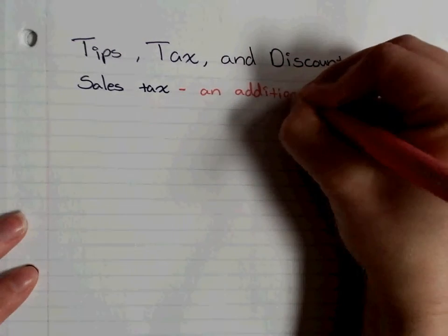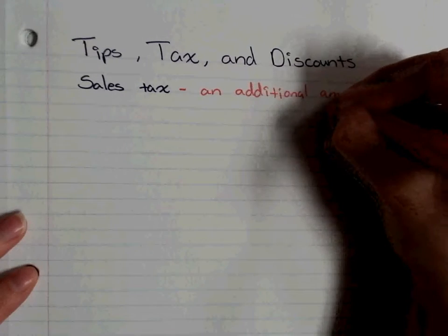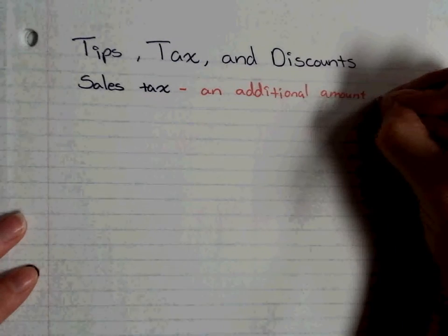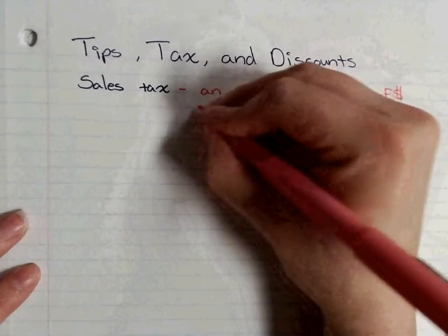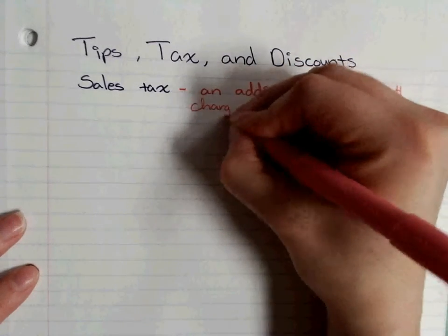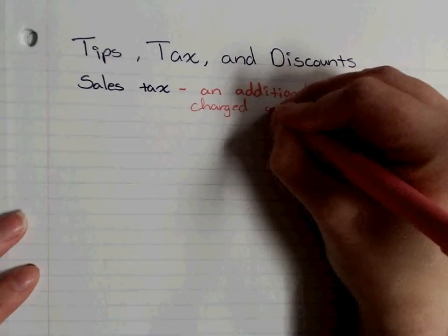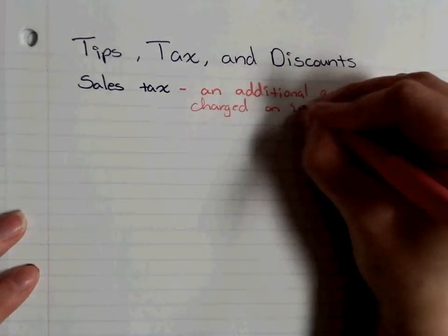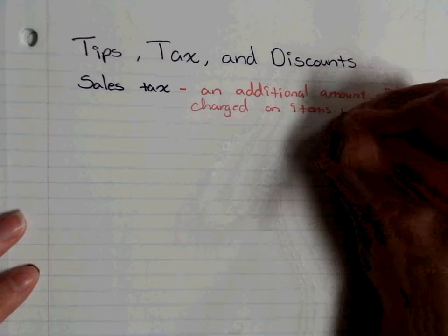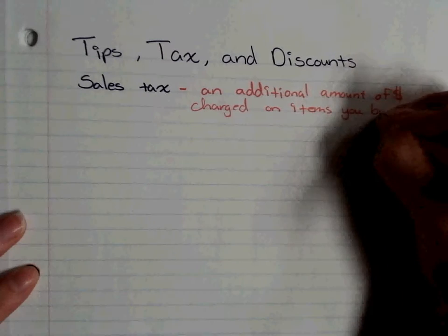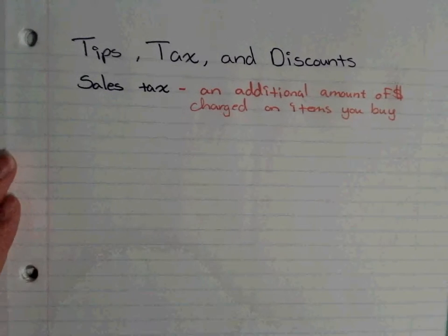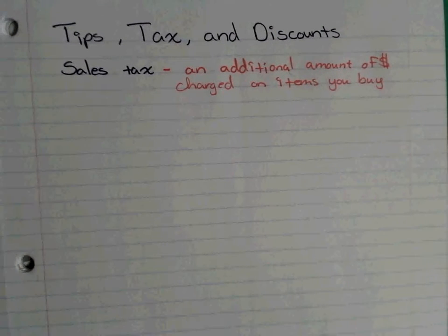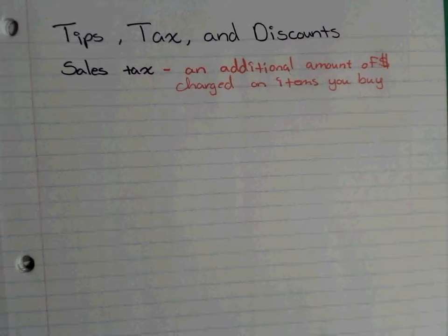Let's get these definitions copied down. Sales tax: it's just an additional amount of money that's charged on items you buy. Food is not the only thing that can be tax exempt.